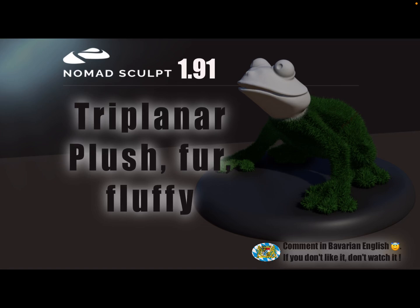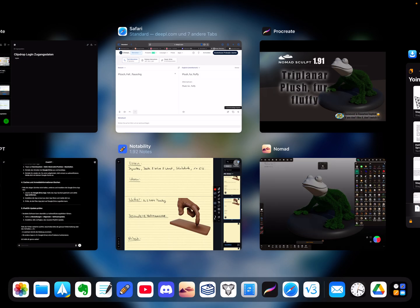Hello Nomad Sculpt! This is a 1.91 feature - you can use the triplanar materials to create a plush, fluffy thing on your creatures. So first you need a texture.